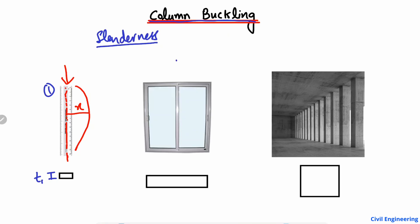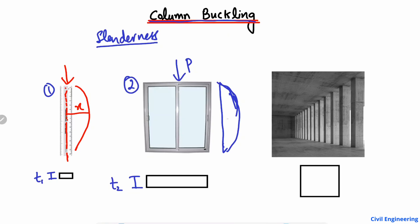Now consider a second object — for example, a window. If I apply load P again, what will happen? Due to the higher thickness t2 of this object, the deflection or deformation will be very small compared to the scale. So x2 will be very small compared to x1, because we now have a thicker material.